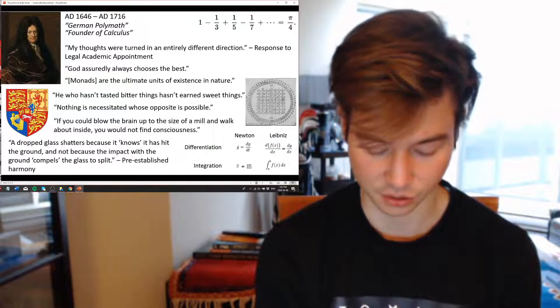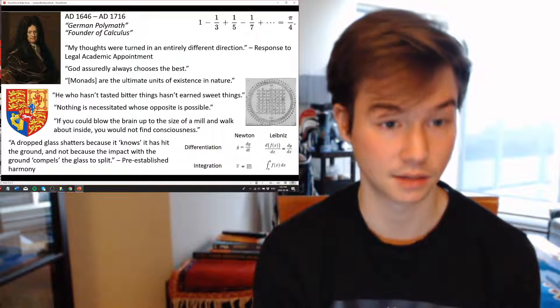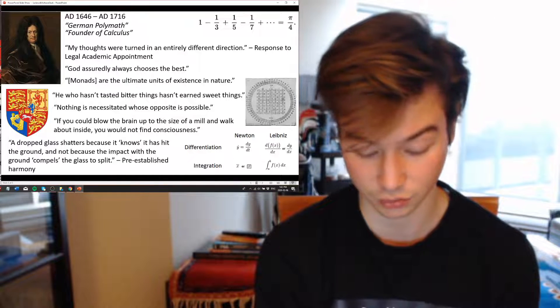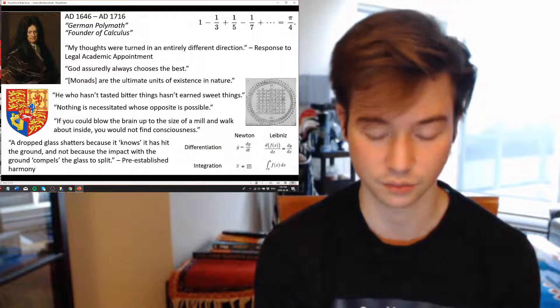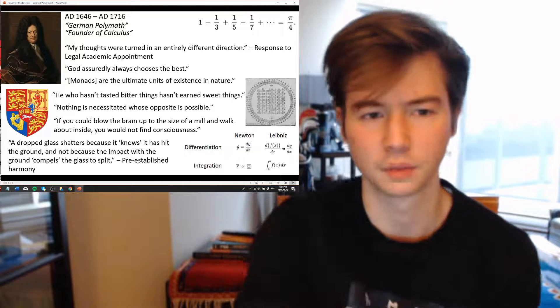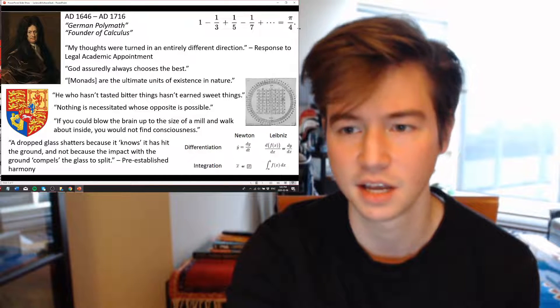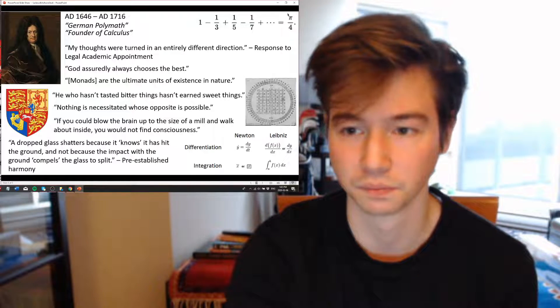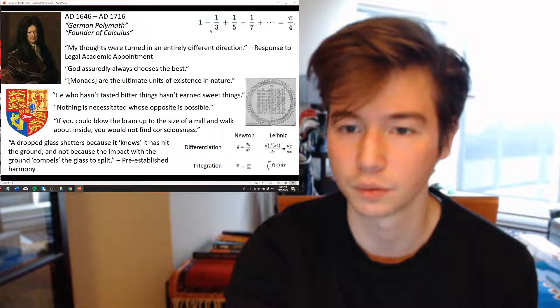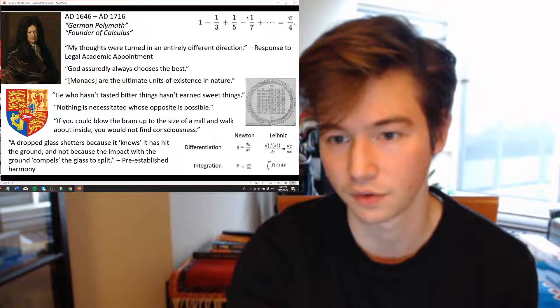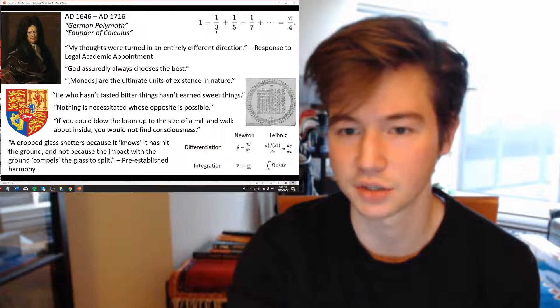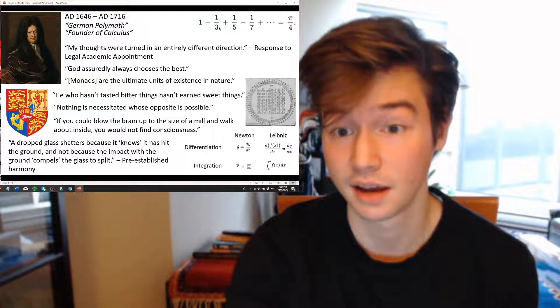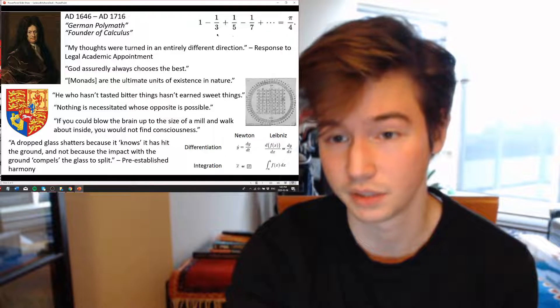And this ultimately led to the discovery of differential and integral calculus. I'll note the other one now, the Leibniz formula for pi. So, this being pi over 4 equals 1 minus 1 over 3, plus 1 over 5, minus 1 over 7. As you can see, each of the denominators increase by 2 each time.